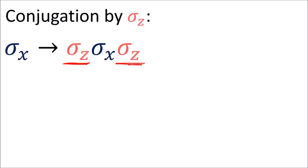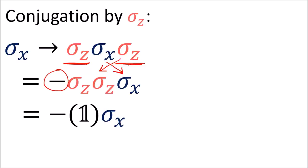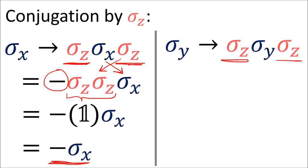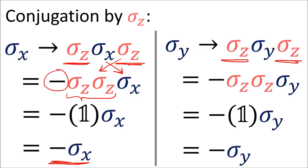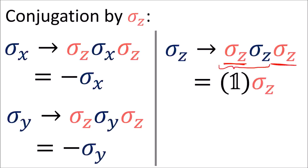We can replace this product of sigma z's by the identity, so we get negative sigma x. Conjugating sigma y by sigma z also gives us negative sigma y. Conjugating sigma z by sigma z just gives us positive sigma z, since there's no swapping needed to simplify.